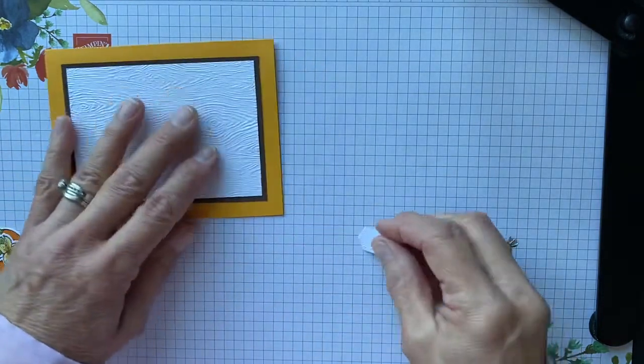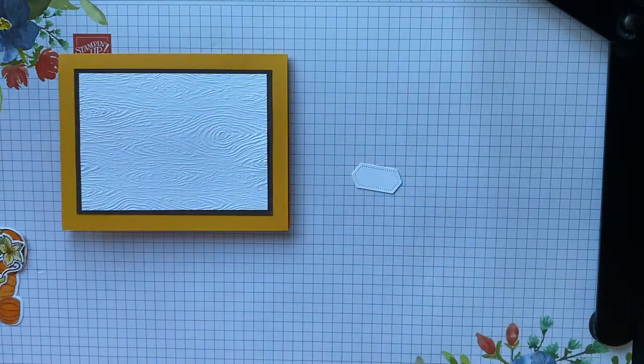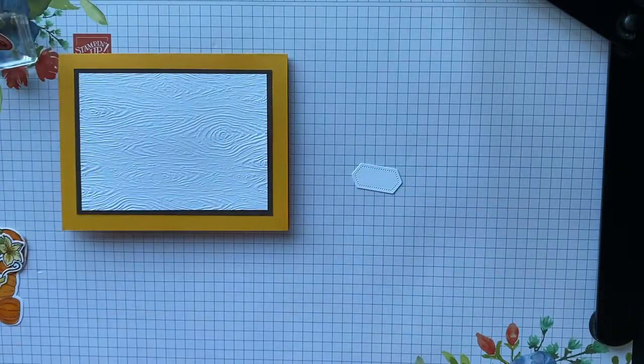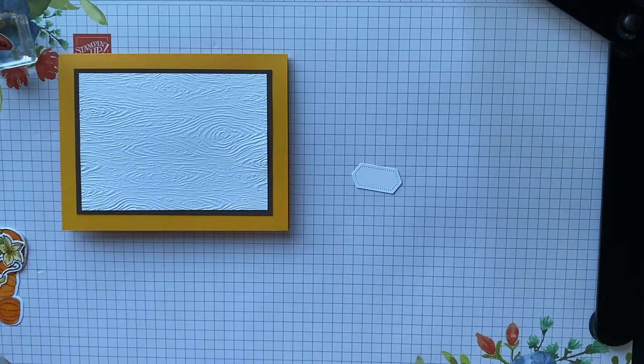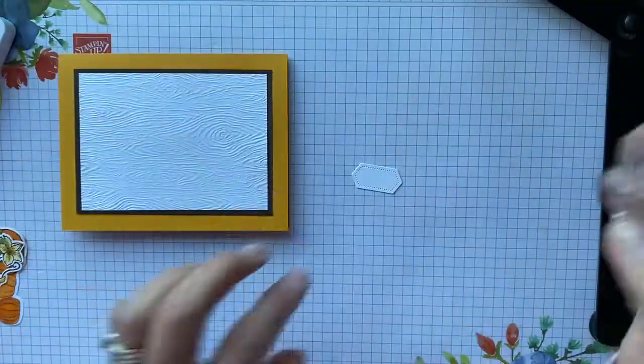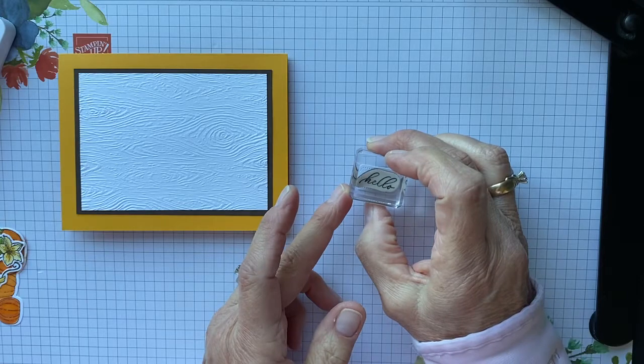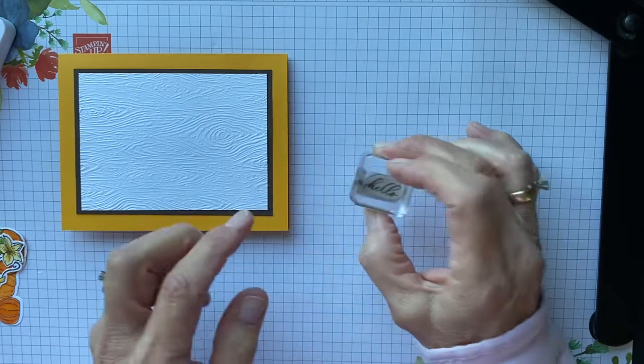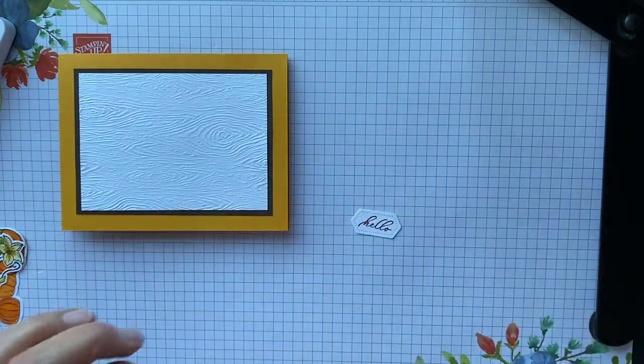So we're going to take this little die and we're going to take the little hello in Cajun Craze. I'm going to stamp that, just like that. Isn't that cute?